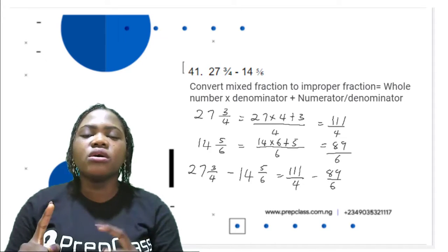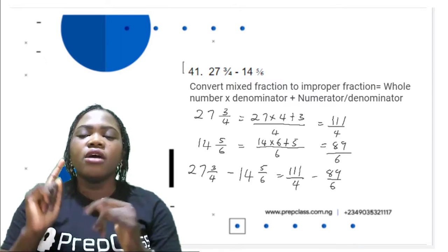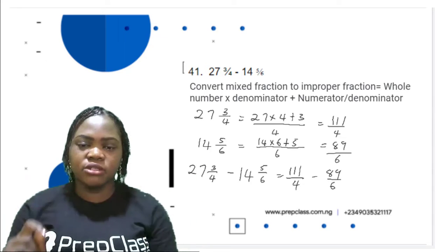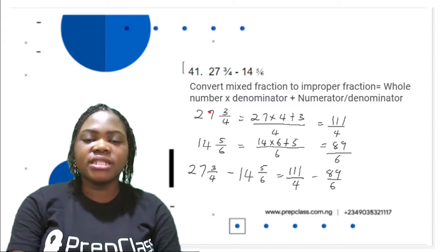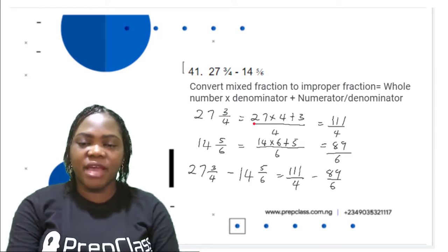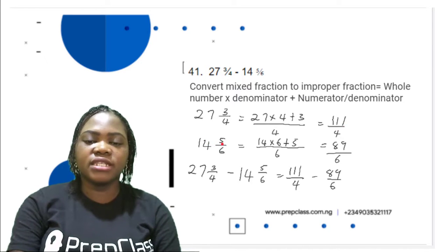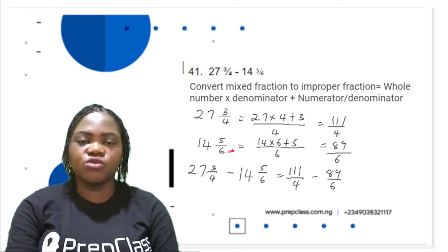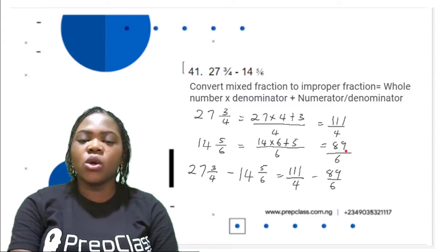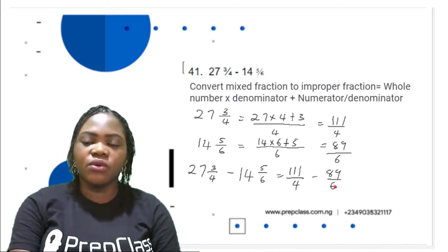The first thing we have to do is to convert the mixed fractions to improper fractions. This is done by: whole number multiplied by the denominator, plus numerator, all divided by the denominator. So 27 times 4 plus 3, divided by 4, gives us 111 over 4. Then 14 times 6 plus 5, divided by 6, gives us 89 over 6. So now we have 111 over 4 minus 89 over 6.